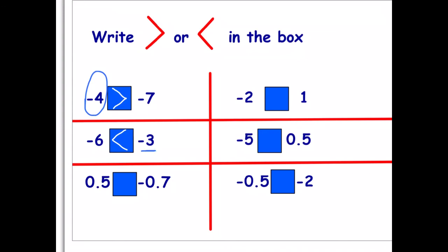Next: zero point five is greater than minus zero point seven, or negative zero point seven, because it's a positive number and obviously bigger than a negative. Then: negative two is less than one. Next: negative five is less than zero point five. And the final question: negative zero point five is greater than negative two.